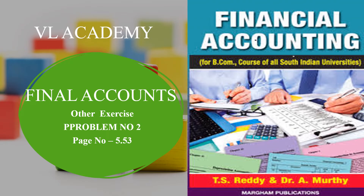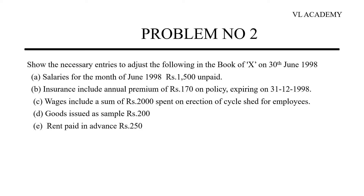Welcome to VL Academy. In this video on final accounts, other exercise problem number 2, let's go to the problem on page number 5.53. In the problem, show the necessary entries to adjust the following in the book of X on 30th June 1998. The following transactions require journal entries and adjustment entries.